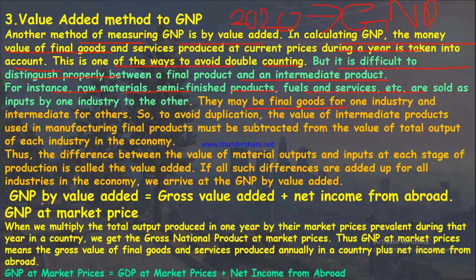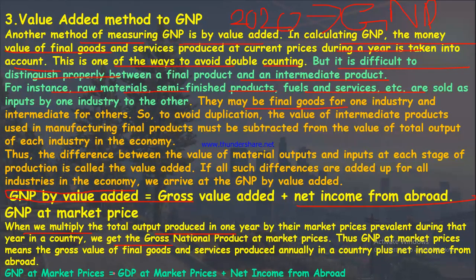GNP at market price: when total output produced in one year is multiplied by the market prices prevailing during that year, we get GNP at market price. Formula: GNP at market price = GDP at market price + Net income from abroad. Remember this formula as it is important for ICSI exams.